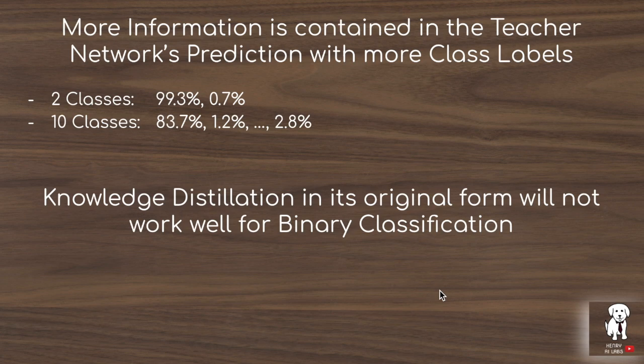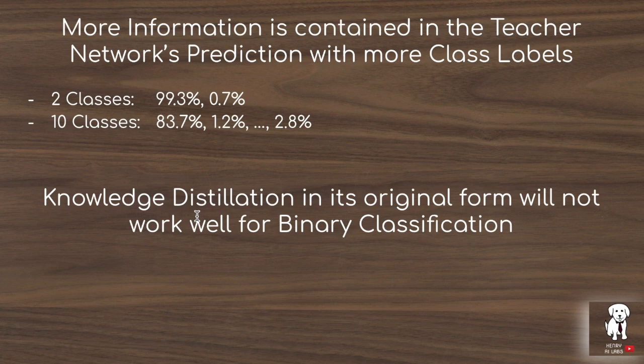The amount of knowledge transferred from the teacher to the student network is highly dependent on the number of classes in the dataset. In CIFAR-10 with 10 classes, the teacher assigning small probabilities to cat or horse for a dog image gives the student more information. But in binary classification with only two classes, you only have two predictions from the teacher to transfer knowledge. That's the high-level idea motivating subclass distillation — inventing subclasses to provide more learning signal from the teacher to the student, especially when you only have two class labels.